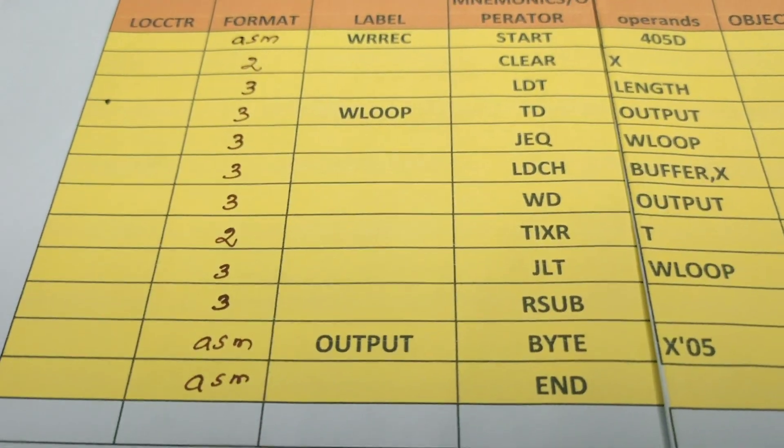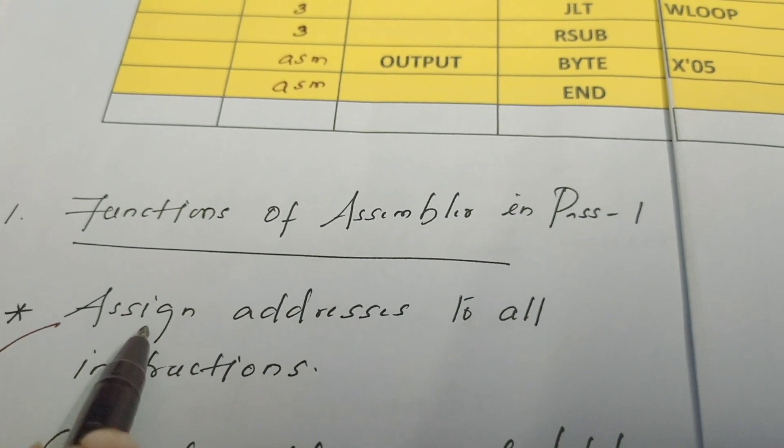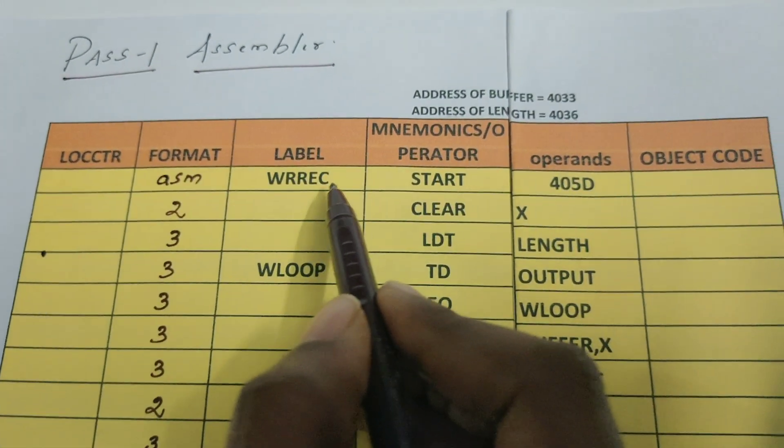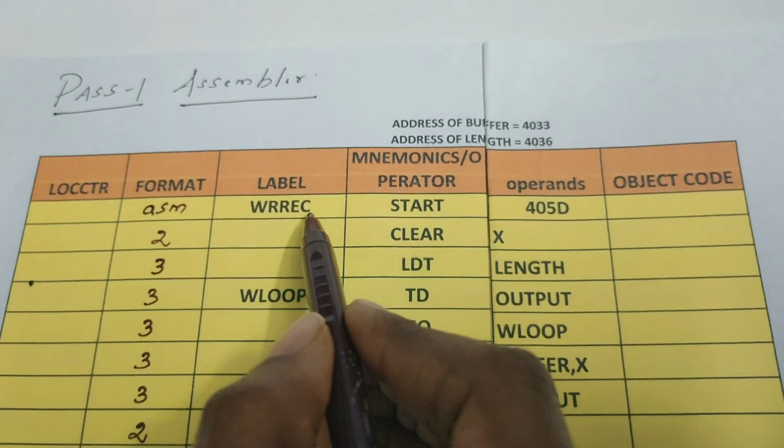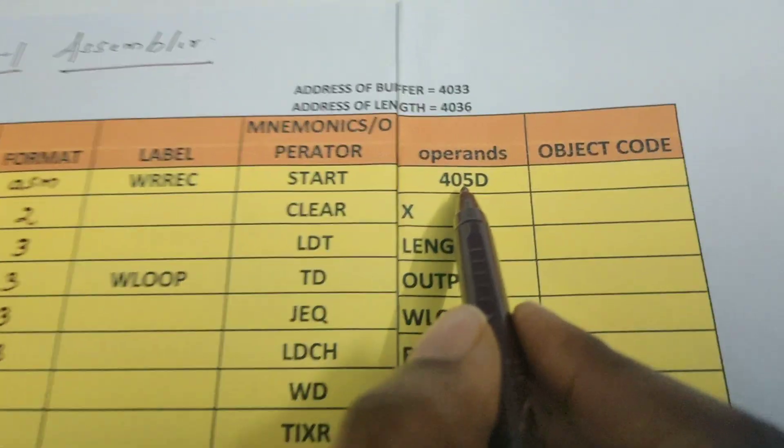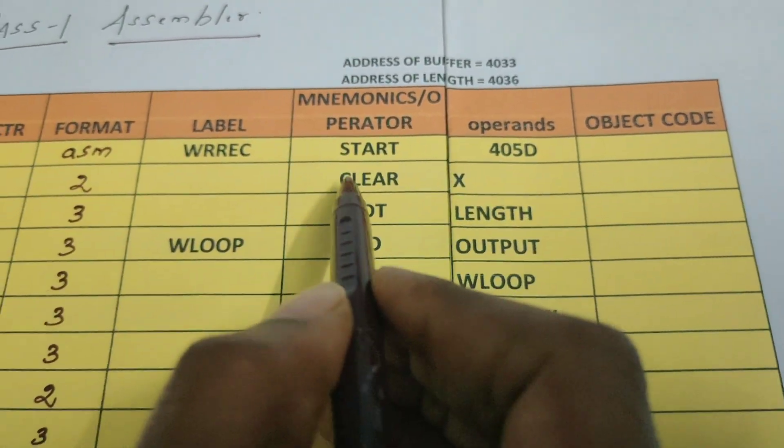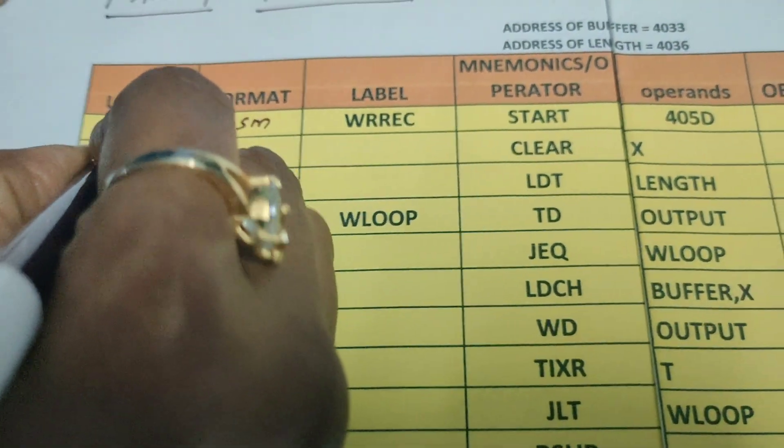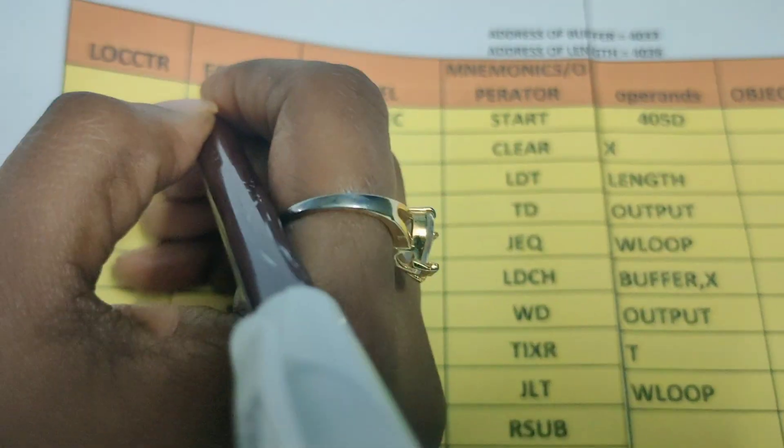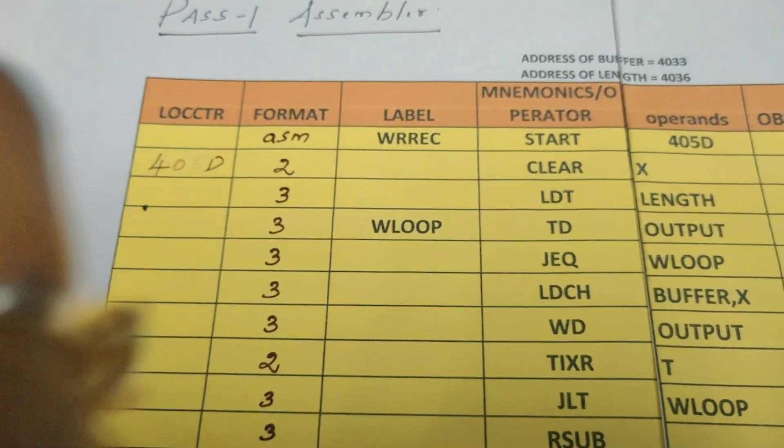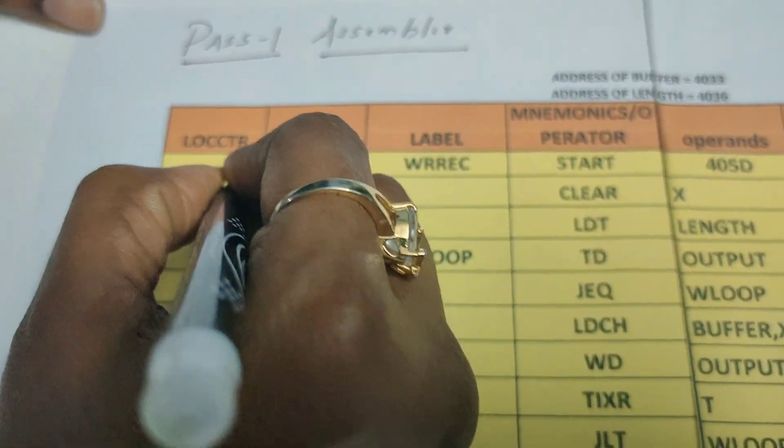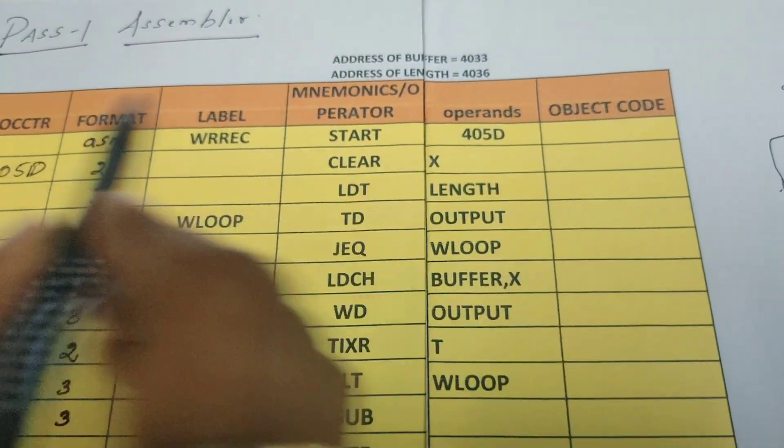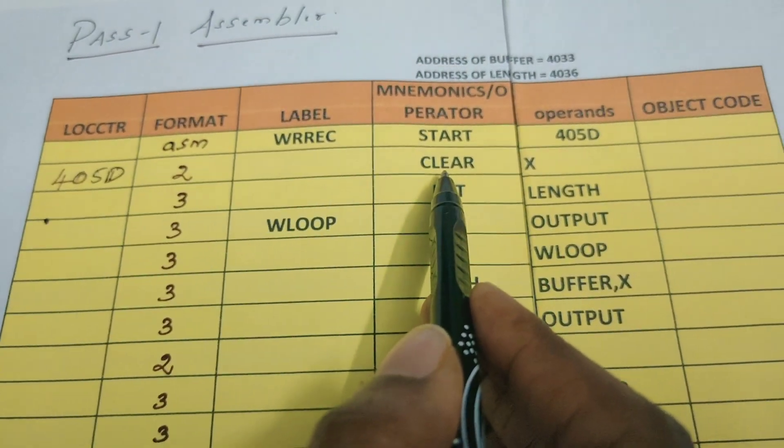Now let us execute the very first function. What is the first function? Assign addresses to all the instructions. Let us start assigning the instructions. WRREC is a name of the subroutine. START gives the starting address of the program. What is the starting address here? It is 405D. So this is the first instruction of the subroutine. For this instruction I am writing the starting address as 405D.